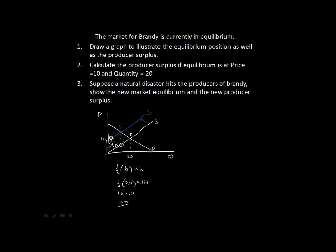And now we can easily find our new producer surplus. Again, same as before, it is the area above the supply curve, but below our equilibrium price, which is this area.